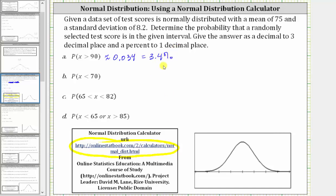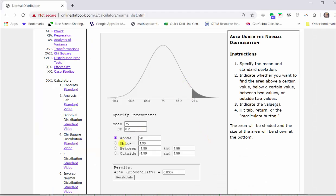Next, we want to find the probability that X is less than 70, or the randomly selected test score is less than 70. Going back to the calculator, we now select below and change the value to 70. Press tab, return, or recalculate.